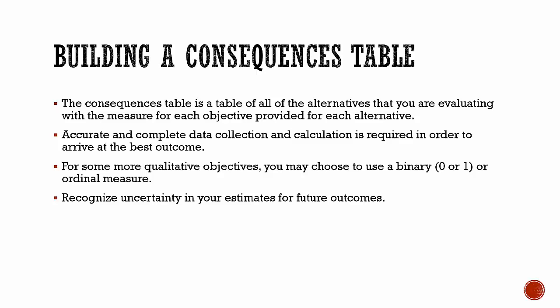Accurate and complete data collection and calculation is required in order to arrive at the best outcome. For some qualitative objectives you may choose to use a binary or zero-or-one measure. For example, if you're looking at houses and you want one with a pool, that's certainly a binary measure — either it has a pool (one) or it doesn't (zero) — or an ordinal measure, which is a ranking. If you're familiar with a Likert scale.